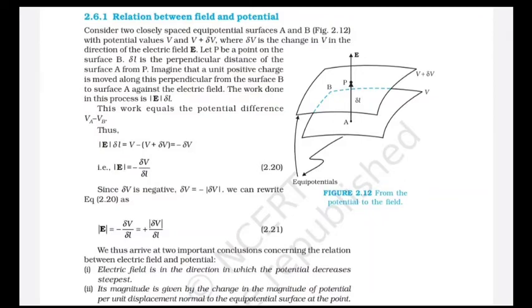The magnitude of E is given by −ΔV/Δl, which is essentially the derivative of potential with respect to distance: |E| = −dV/dl. Since ΔV is negative, we can rewrite this as |E| = +|ΔV|/Δl, giving the magnitude of the electric field as the rate of change of potential per unit displacement.